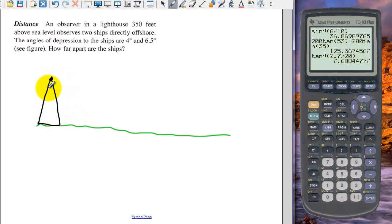Our lighthouse is up. Our lighthouse is 350 feet tall. And we have two boats that we are looking at. And we are spying down to one of them here. And we have an angle of depression of 4 degrees. That's probably the furthest one. So let's put two here.